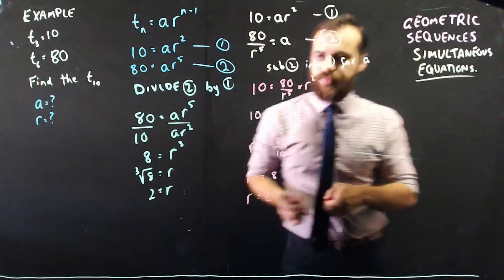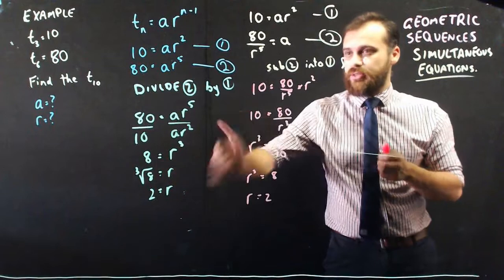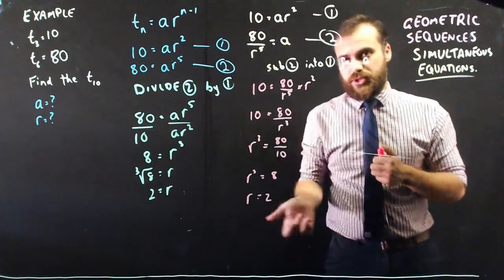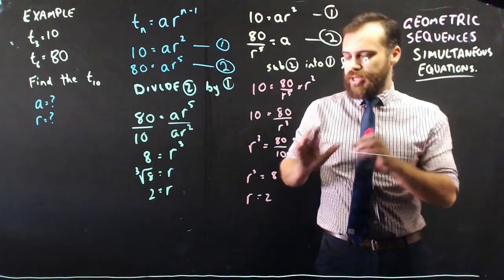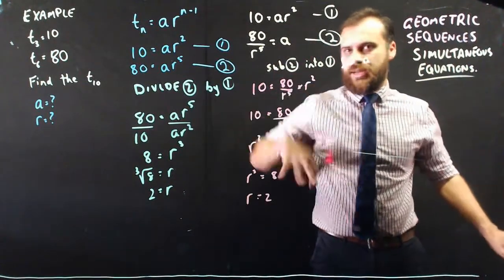So it doesn't matter which way you do it. You can use that fancy dividing method, or you can use this method which you have seen before. But now we know that r equals 2. We need to know what a is now.